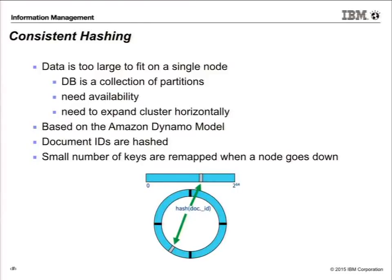The fundamental way that we do our distributed database is something called consistent hashing, based on the Amazon Dynamo model. Data is too large to fit on a single node — it could be many, many terabytes — so let's spread it across multiple servers. How do we do this efficiently so that if a node goes down, I can stand up another node without having to rescale my whole cluster? A database is a collection of partitions, and when data comes in, you're assigned to a partition and to a node by doing a hash of that document ID — a CRC64 or CRC32 hash depending on the range of your cluster.